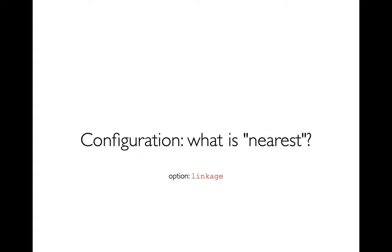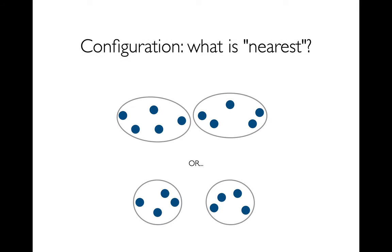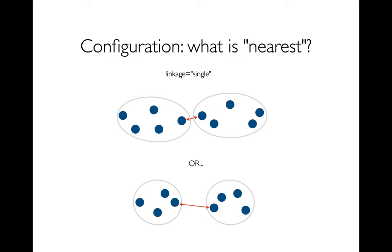This raises the question: what does 'nearest' mean? If I'm trying to find the distance between two clusters, one option is to look at every pair of points within the two clusters and find the distance between the closest two. Because that's not a worst-case scenario — that's called single linkage.